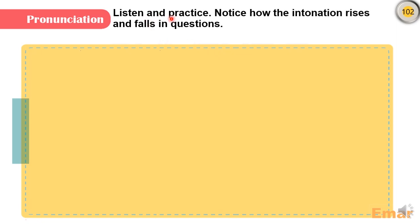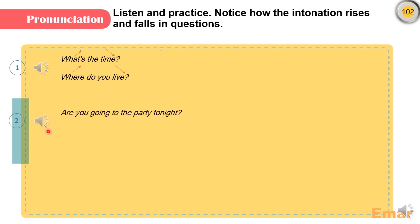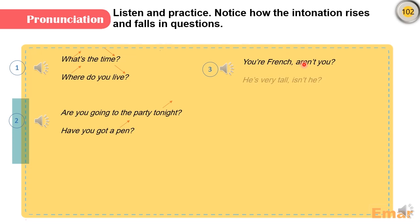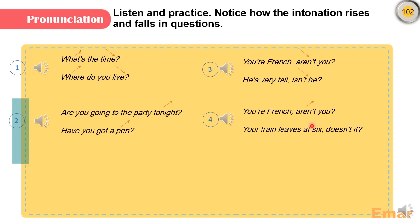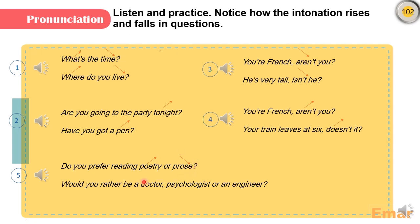Let's move on to the pronunciation section. Listen and practice — notice how the intonation rises and falls in questions: 'What's the time?' 'Where do you live?' 'Are you going to the party tonight?' 'Have you got a pen?' 'You're French, aren't you?' 'He's very tall, isn't he?' 'Your train leaves at six, doesn't it?' 'Do you prefer reading poetry or prose?' 'Would you rather be a doctor, psychologist, or an engineer?'